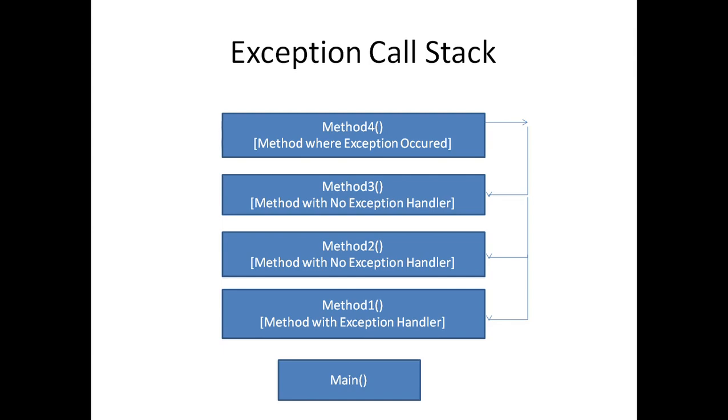So what will happen? Our program flow execution goes from method one to method two, method three, and four, and then traces back from method four to method three to method two until an exception handler is found. This is all about exceptions and exception call stack.